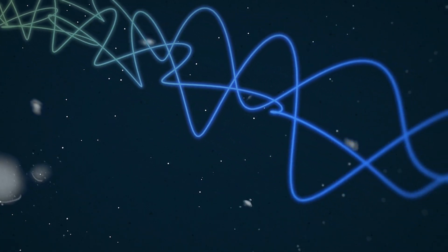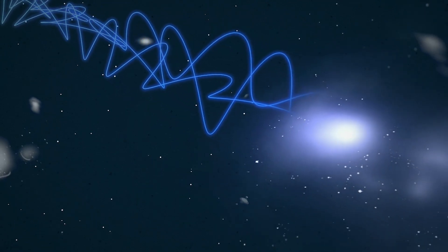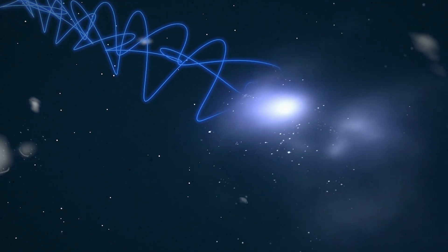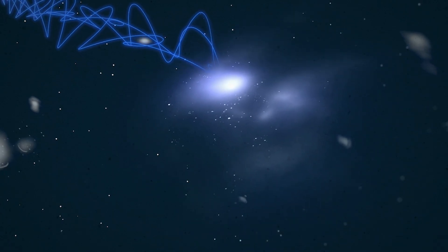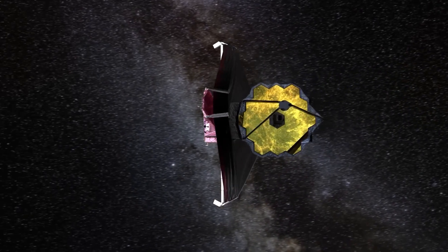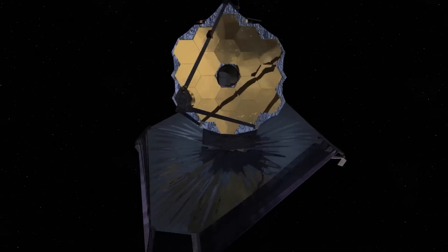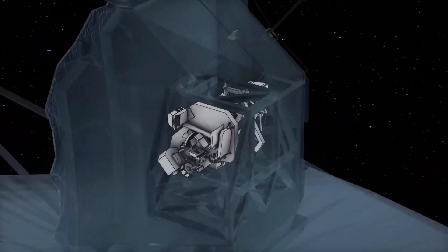This discovery demonstrates how galaxies clumped together early in the history of the universe and how they evolved into the massive structures we see today. It also highlights James Webb's ability to detect and study faint and distant galaxies in the infrared.